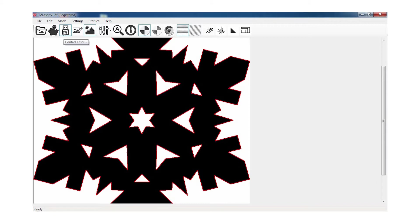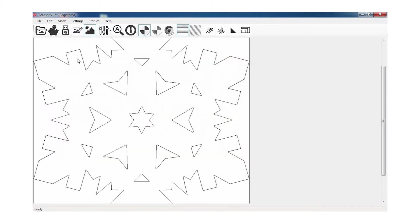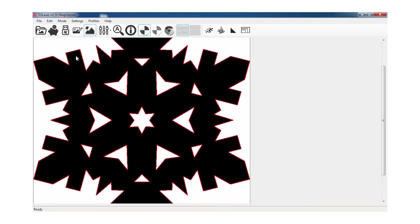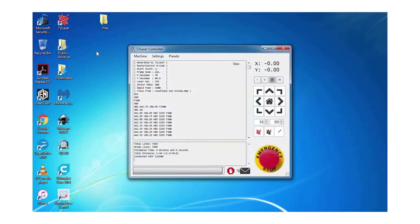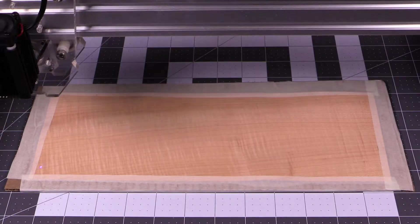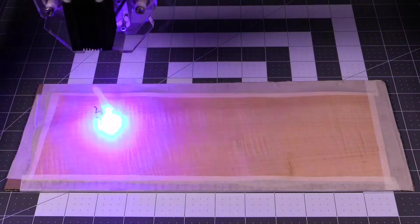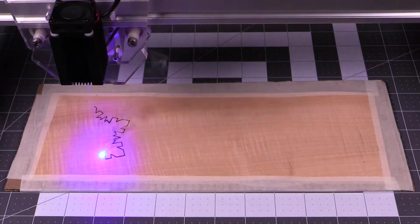Once that's done, I'm going to load this traced snowflake into the T2 software and get ready for cut. I'm going to go ahead and cut out my smaller outside snowflakes.